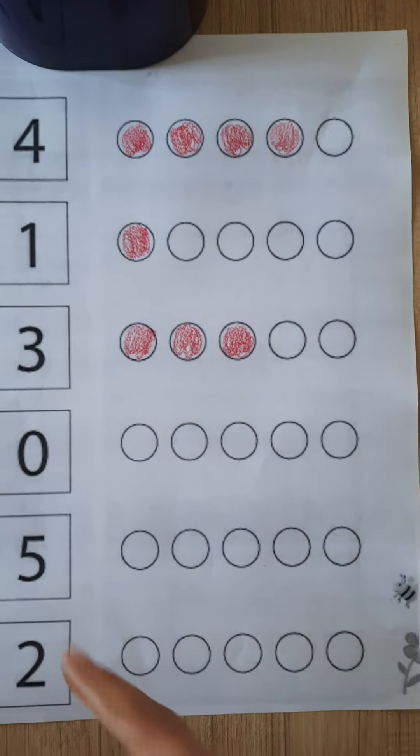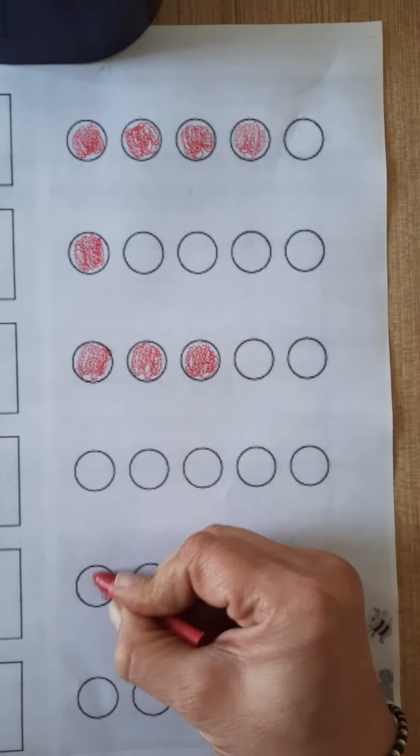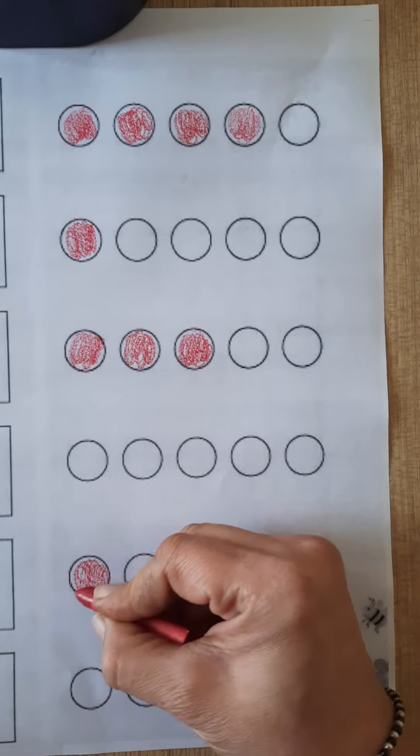This is number 5. So we will color in 5 circles from these circles. 1. Count with me. 1,